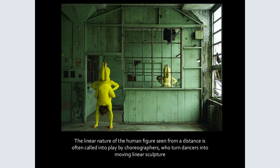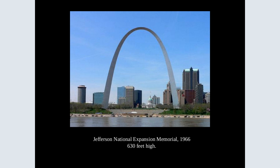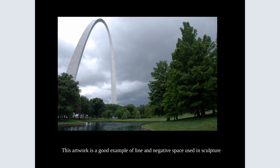There are like two or three people stacked together. If you've ever been to St. Louis and seen the Arch — its actual real name is the Jefferson National Expansion Memorial — if we look at it, it's just one continual line that goes from thick to thin. This artwork is a good example of line and negative space used in sculpture. That empty space sort of frames the sky.